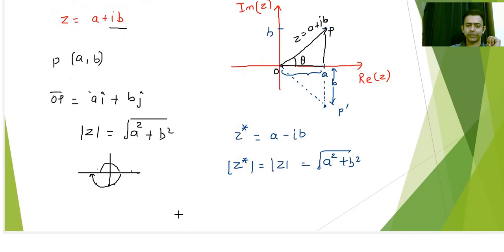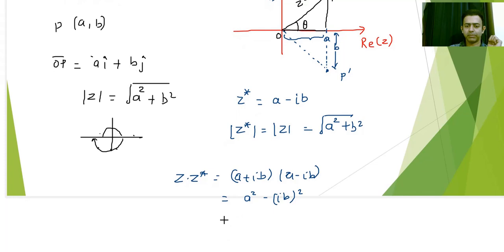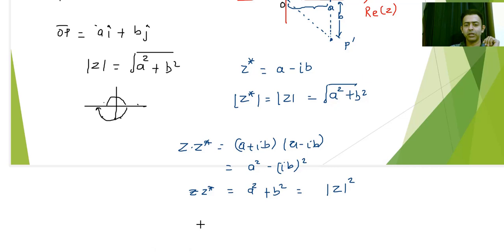The conjugate z-bar has the same modulus as the original z, which is √(a² + b²). The argument of the conjugate is just the negative of the original argument. An important property: if you multiply z with z-bar, you get z·z̄ = (a + ib)(a - ib) = a² + b², which is nothing but |z|². So wherever you see the multiplication of a complex number with its conjugate, you replace it with |z|².